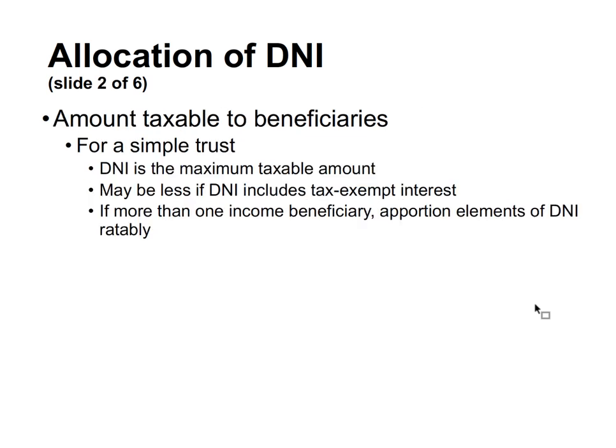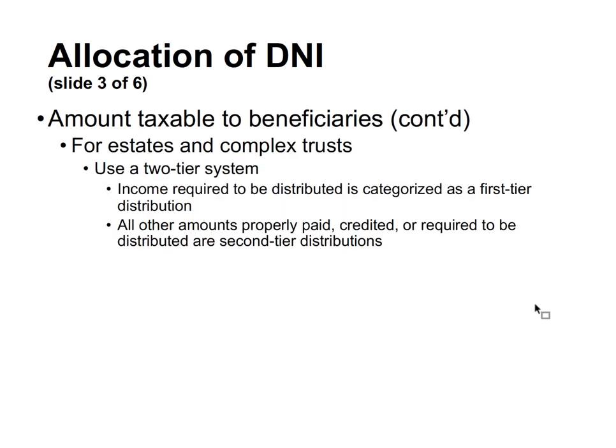For a simple trust, DNI is always the maximum taxable amount — it may be less if the DNI includes tax-exempt interest. If there is more than one income beneficiary, the elements of DNI are apportioned rateably among them. For simple trusts, it's all about rateable, proportionate allocation.